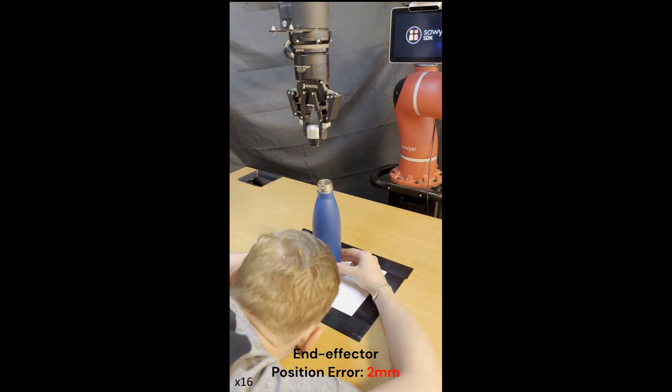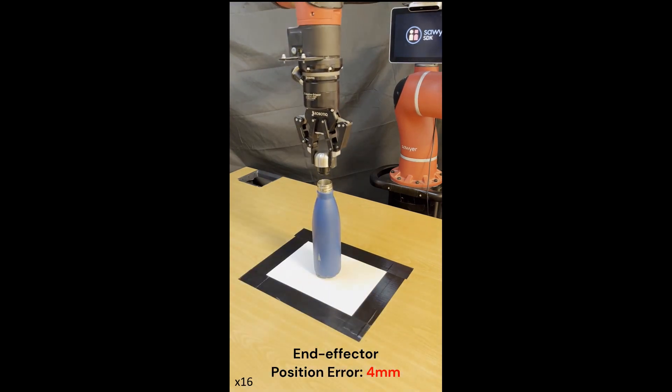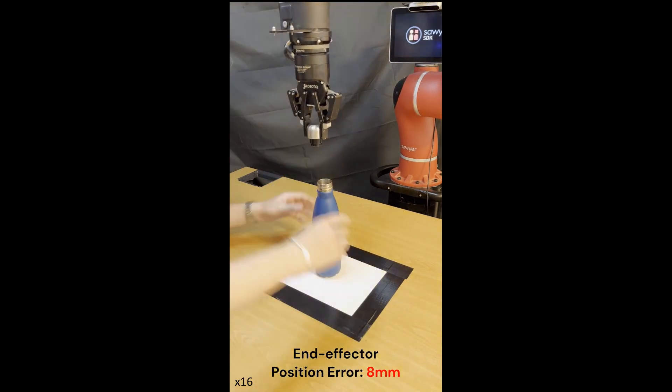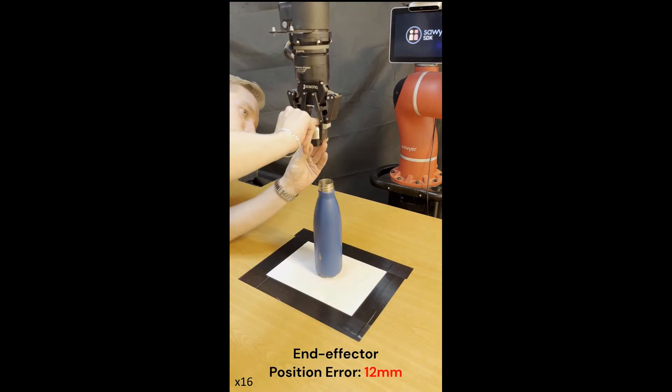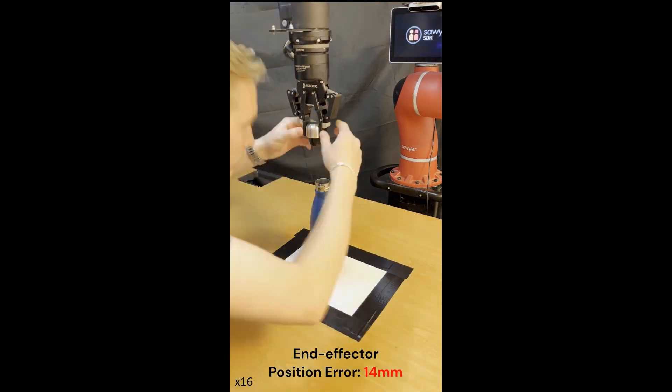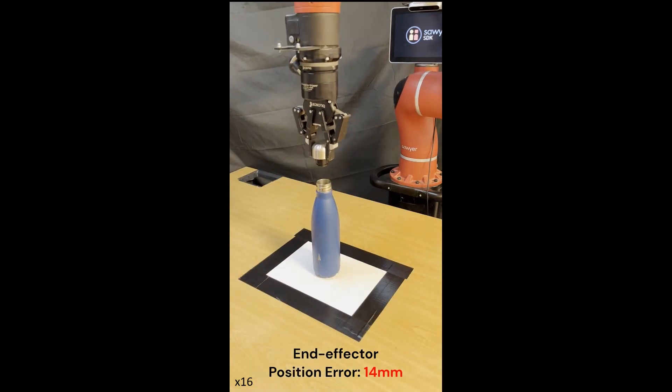And then repeatedly reset the environment, move the end-effector to a noisy starting position, replay the demonstration, and note if the task execution was successful. We do this ten times for increasing position noise magnitudes.